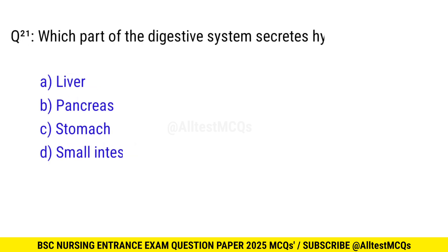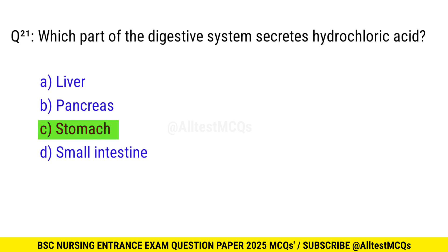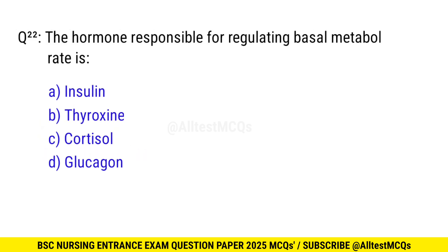Question No. 21: Which part of the digestive system secretes hydrochloric acid? The right option is C: Stomach. Question No. 22: The hormone responsible for regulating the basal metabolic rate is? The right option is B: Thyroxine.